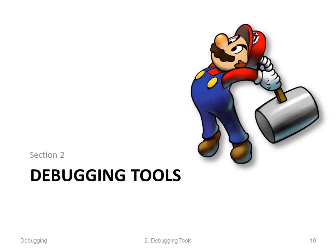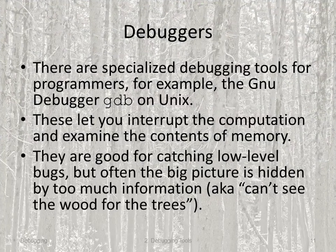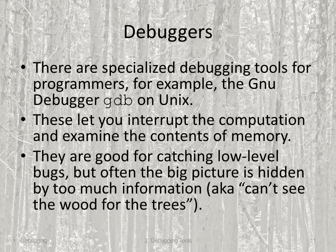Some debugging tools — and these don't include a big hammer, which is probably what most people use. There are things called debuggers, specialized debugging tools for programmers. For example, the GDB debugger, available for free on Unix. Debuggers let you interrupt the computation at a breakpoint and examine the contents of memory at that time, so you can look around and see if things are the way you want them to be. They're very good for catching low-level bugs, but quite often the big picture is hidden by too much information — you can't see the wood for the trees. Nonetheless, debuggers are very useful tools.